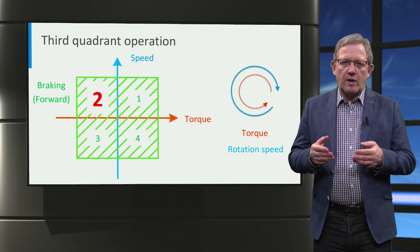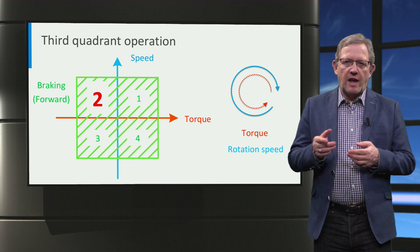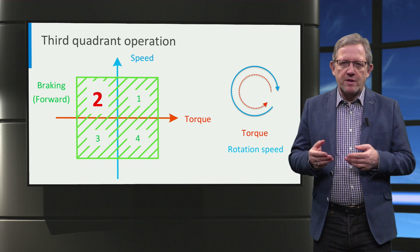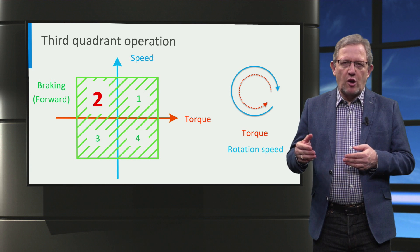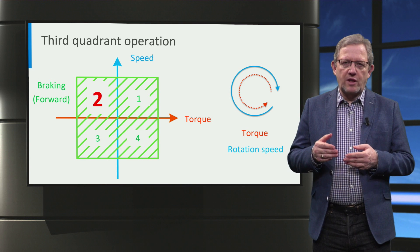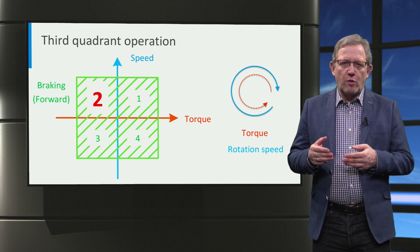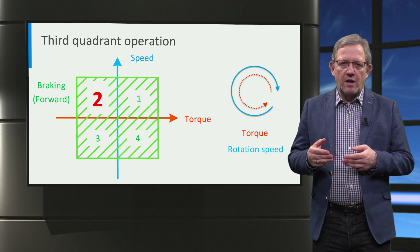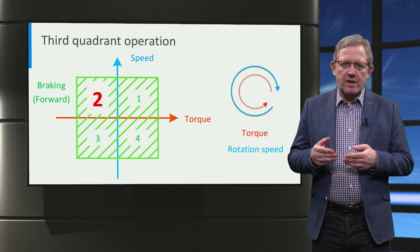In case of second quadrant operation, the motor has positive polarity speed but negative polarity torque. This happens when the wheels are moving forward but the torque is in the opposite direction. This results in regenerative braking and the car slows down while moving forward. Regenerative braking can also be implemented for operation in quadrant 4 by extracting power out of the motor using the motor drive to charge the traction batteries.